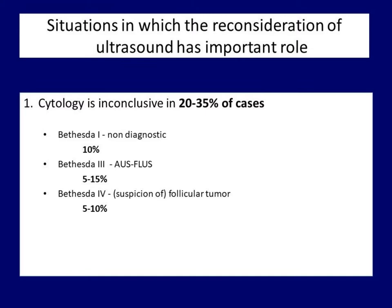A follicle tumor must have a capsule. The ultrasound signs of this are the halo and the perinodular vascularity. With very few exceptions, all follicle tumors show one or both of these signs. It means that the right nodule is unlikely to be a follicle tumor despite the cytological report. Roughly one third of all cytologies give ambiguous results. These are the cases where we have to make an individual decision by integrating the available data. Not only the ultrasound presentation, but also the age of the patient, the palpation of the lesion, and the progression of the nodule must be taken into account. Nevertheless, the ultrasound presentation is the most important among them.